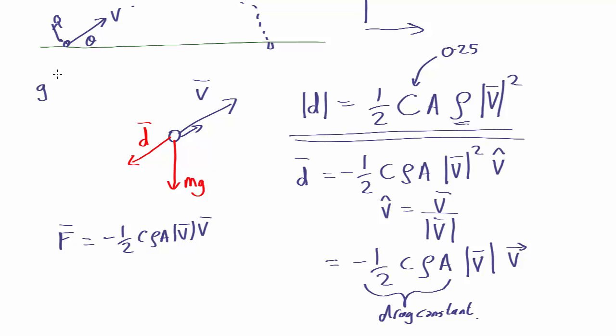So if we treat g as a vector, vector g is just going to be zero in the x direction, zero in the y direction, and mod g in the z direction.